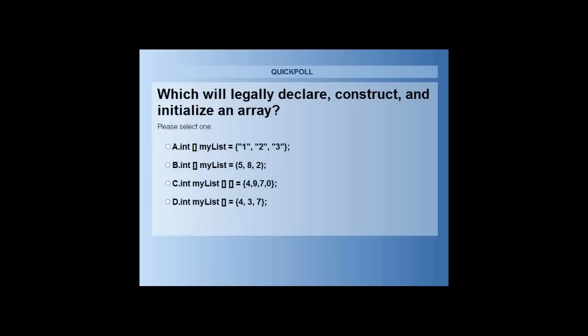So majority of the people have voted. The correct option to it is option B, which is int array my list, and here I have the values 5. Alright, I'm sorry about that.